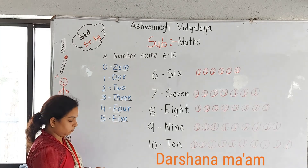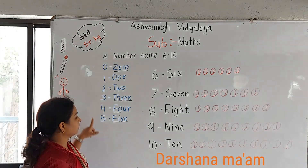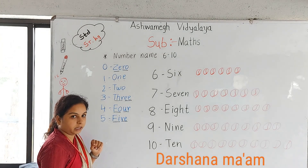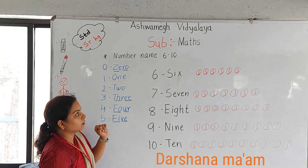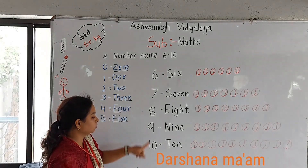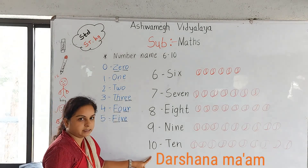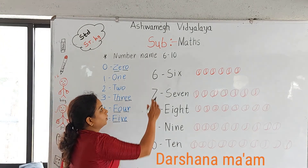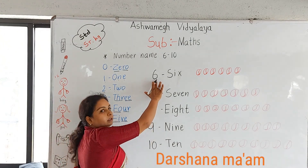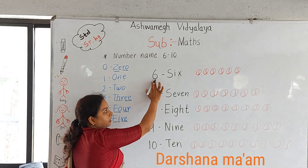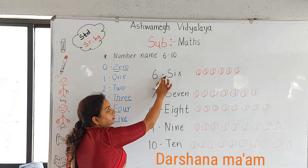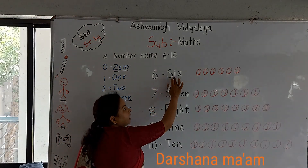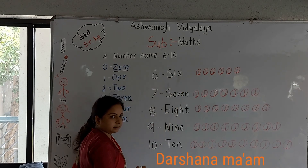Okay students, so that was 0 to 5 spelling. And now I'll ask 6 to 10 spelling. So here is our 6th number. Number 6 - S-I-X - 6.